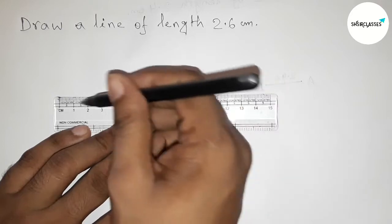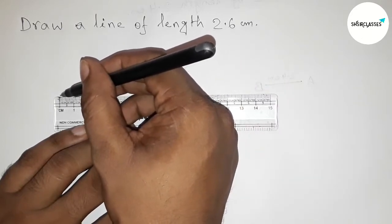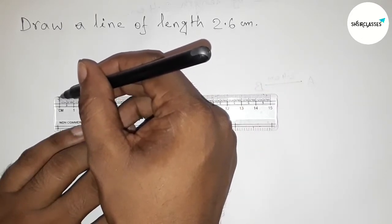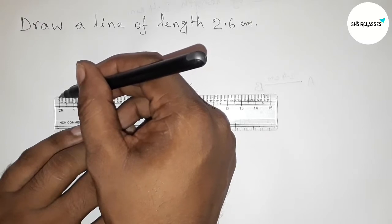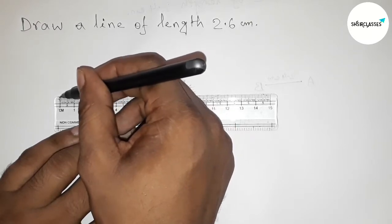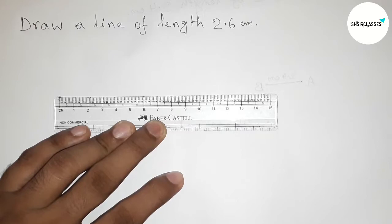Next, counting the length 2.6. So this is the starting, this is starting zero, so first marking this, okay?